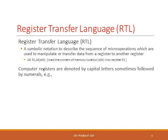Now we will discuss register transfer language. Register transfer language is a symbolic notation to describe the sequence of micro operations which are used to manipulate the data of a register or to transfer the data from one register to another. For example, LW R1, M[0x04] means it loads the content of memory location 04 into register R1. This is the register transfer language notation for that instruction. Computer registers are denoted by capital letters, or capital letters followed by numerals.